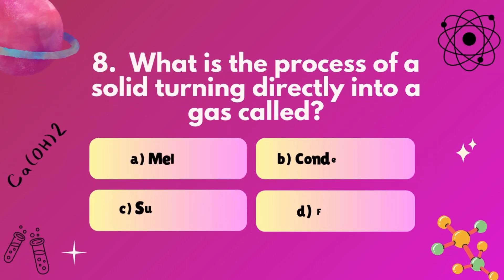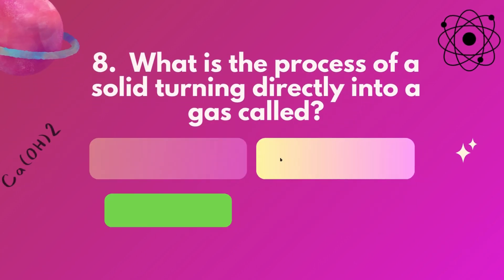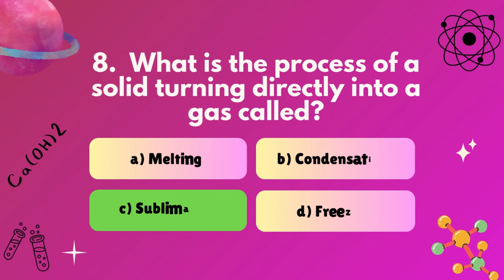Question 8: What is the process of a solid turning directly into a gas called? A, melting. B, condensation. C, sublimation. D, freezing? Correct answer: C, sublimation.